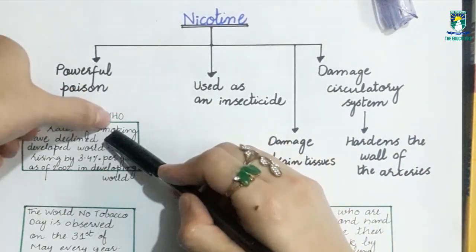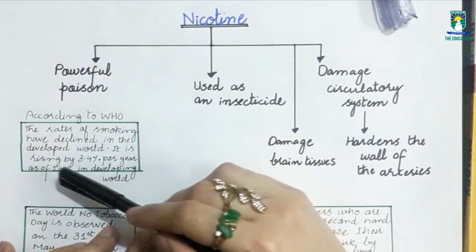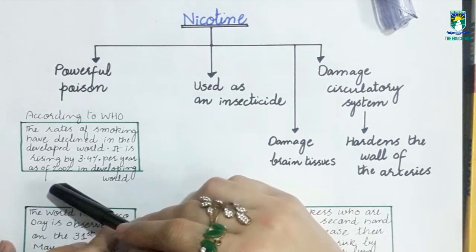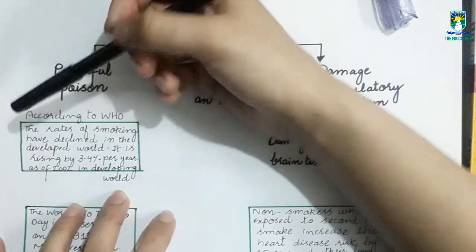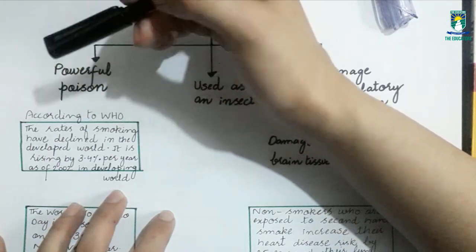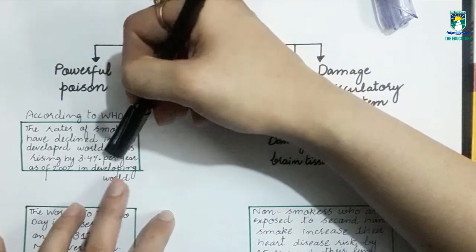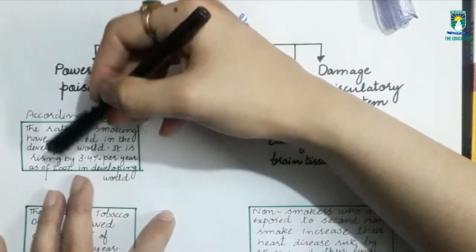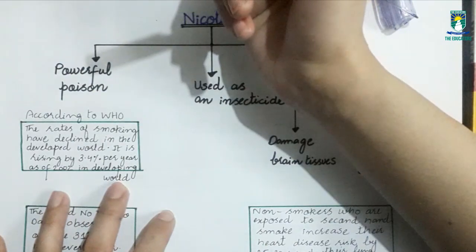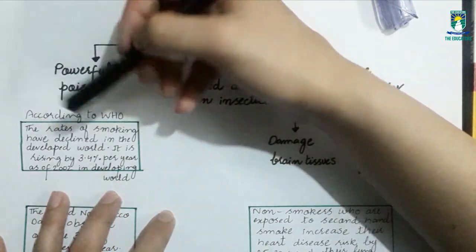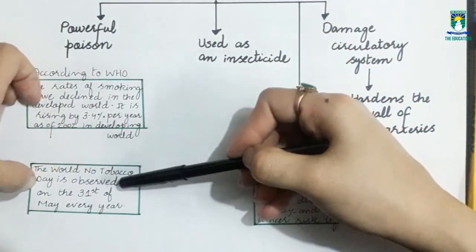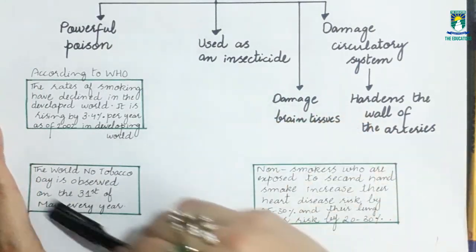According to the WHO, the rates of smoking have declined in developed world. It is rising by 3.4% per year as of 2002 in developing world. The world no tobacco day is celebrated on 31st of May every year.